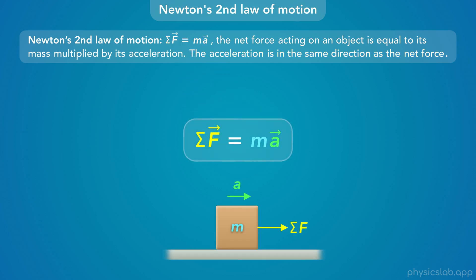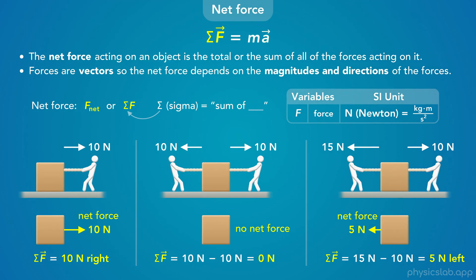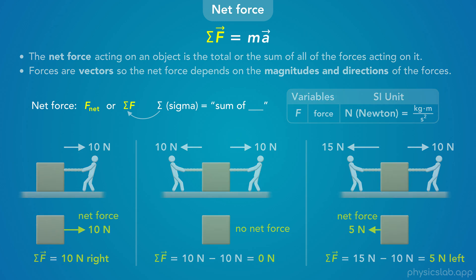Let's take a closer look at this equation. Sigma F is the net force acting on an object, m is the mass of the object, and a is the acceleration. The net force and acceleration are vectors, meaning they have a magnitude and a direction. We can write net force as F-net or as sigma F, which means the sum of the forces. The SI unit for force is a newton, N, which equals 1 kilogram meter per second squared.